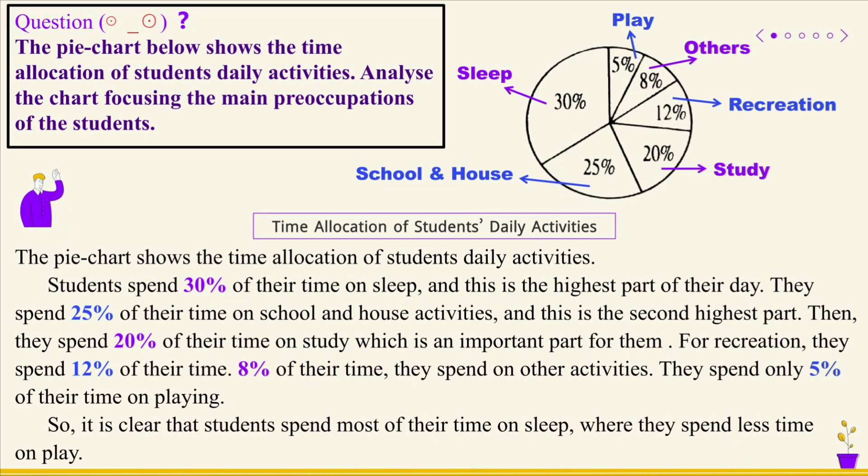The pie chart shows the time allocation of students' daily activities. Students spend 30% of their time on sleep, and this is the highest part of the day. They spend 25% of their time on school and house activities, and this is the second highest part.